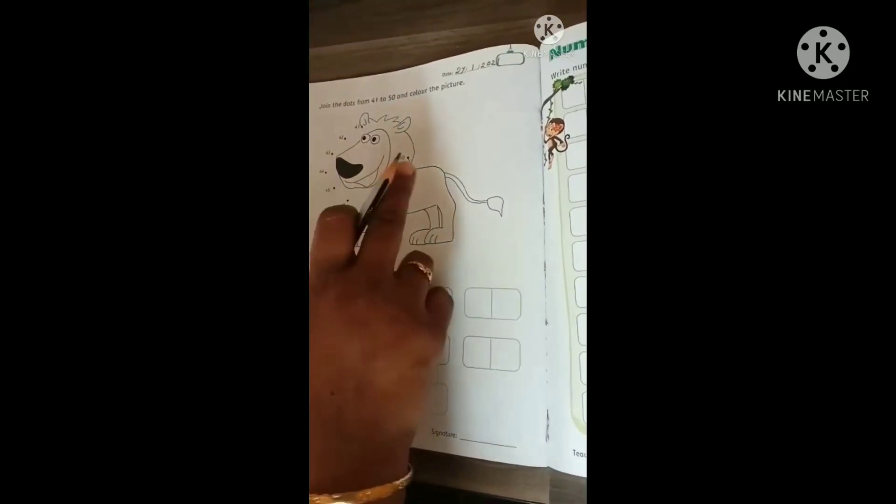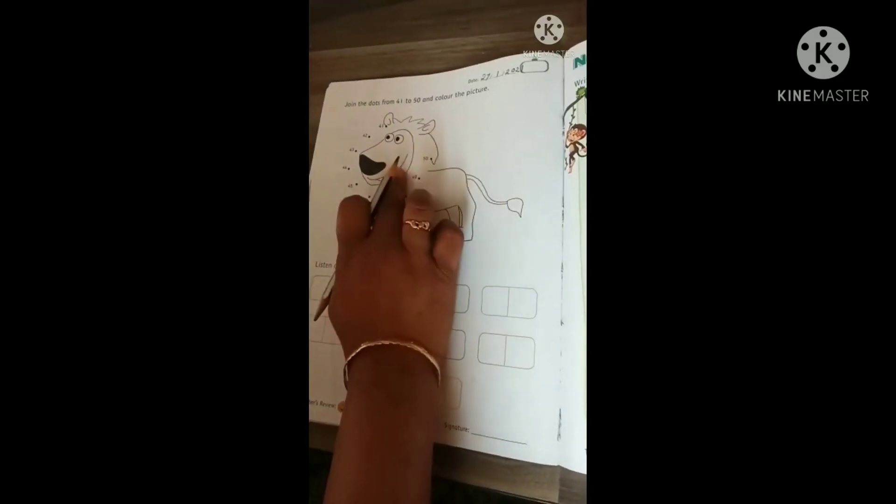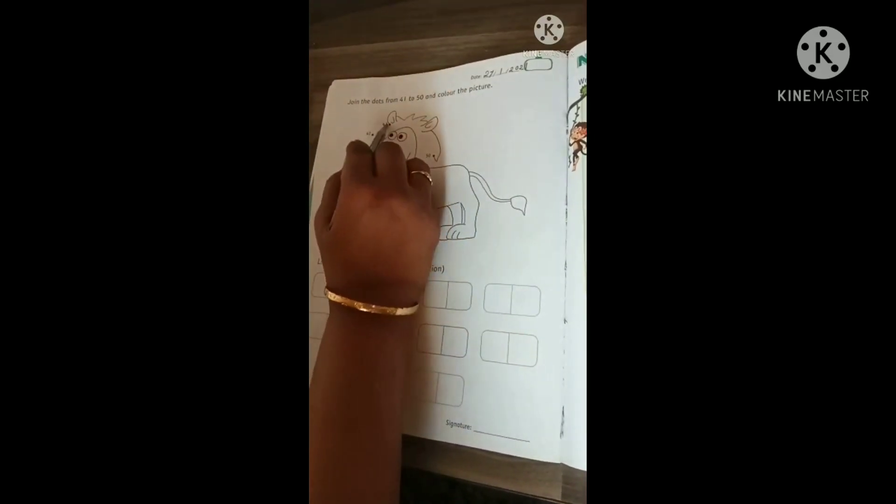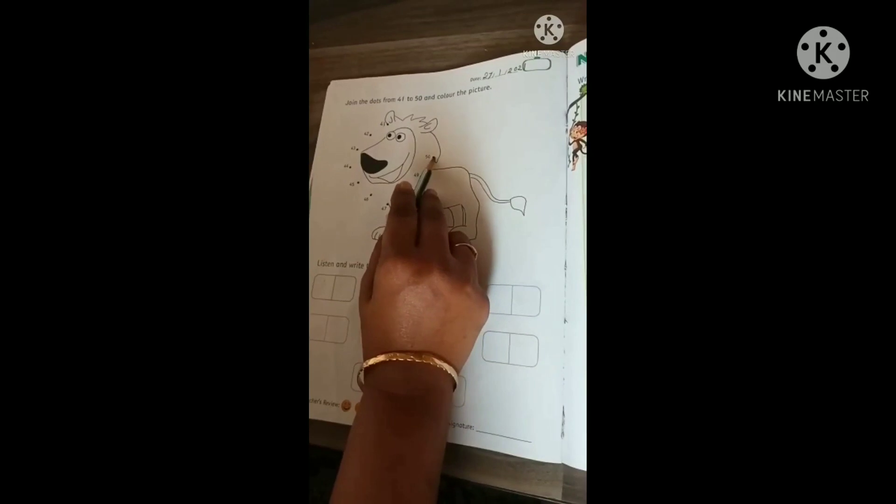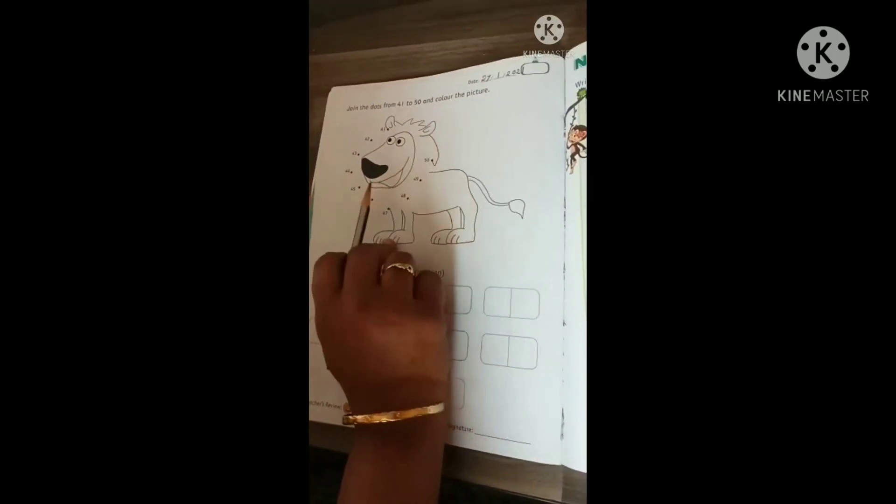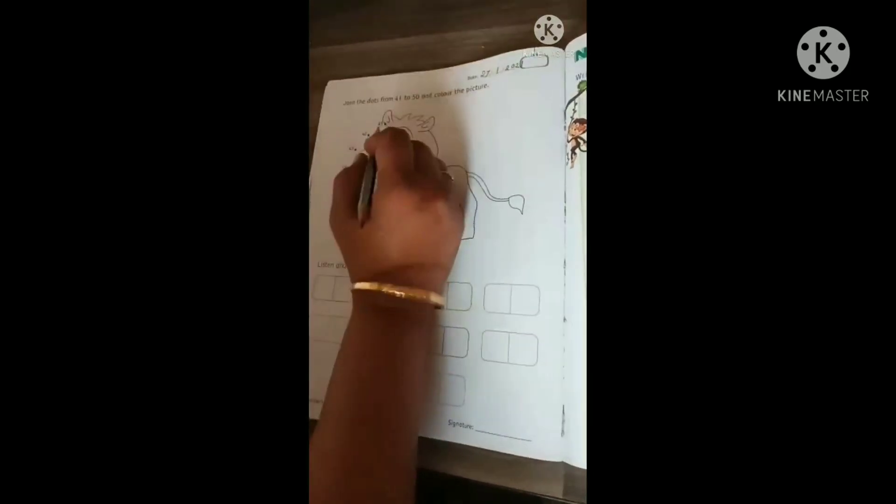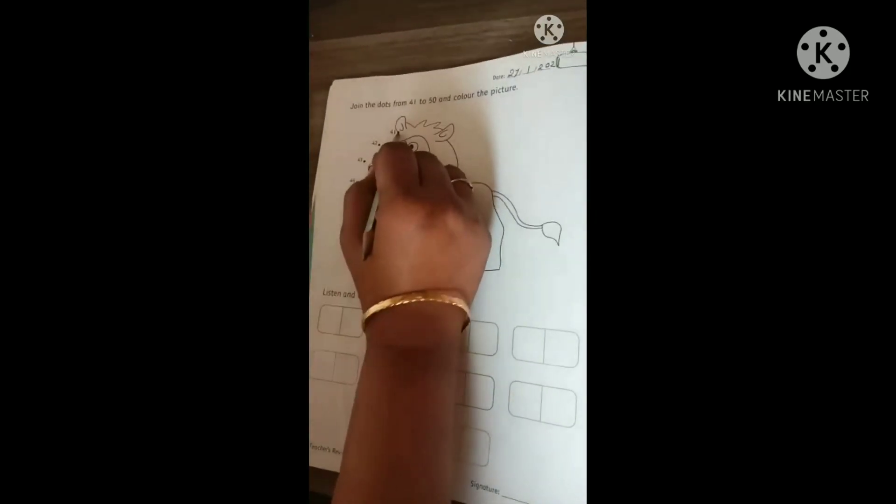See kids. There is the incomplete picture. We have to join the dots from 41 to 50 to complete the picture. Come on kids. Let's start to complete the picture with me. See. Here is 41.